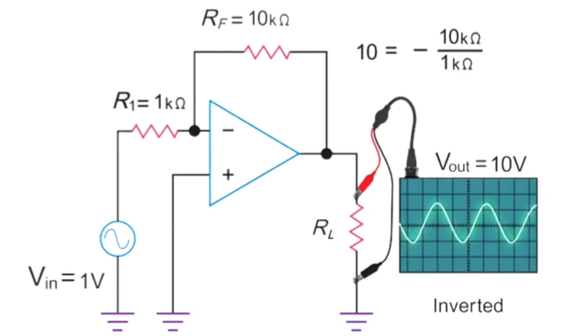Reducing the feedback resistor value RF to 5 kiloohms will result in an output of 5 volts peak to peak but likewise, inverted.